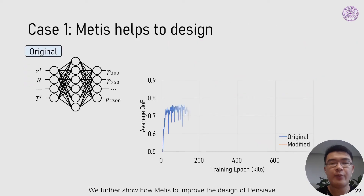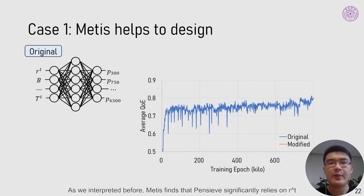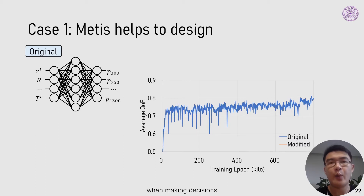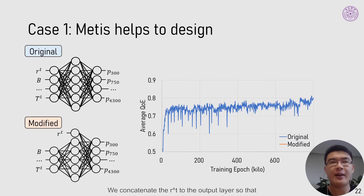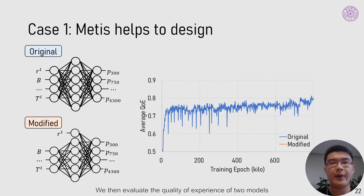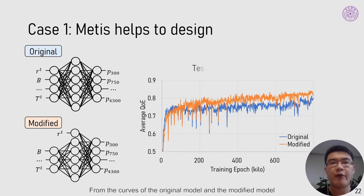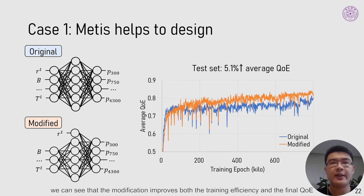We further show how Metis improved the design of Pencil. Metis finds that Pencil significantly relies on RT when making decisions. We concatenate RT to the output layer so it can affect the prediction result directly, and then evaluate the quality of experience of two models. From the curves of the original and modified models, we can see that the modification improves both training efficiency and the final QoE.